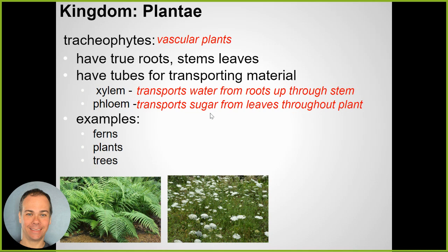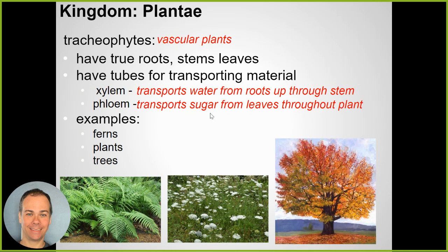Those white flowers you see growing in fields and parking lots are called Queen Anne's lace - scientific name Daucus carota, wild carrot. If you dig one up, there's a little root in the bottom that smells like a carrot, and you can actually eat them. Survival tip: if you're ever lost in the forest, find some Queen Anne's lace and eat some of the roots.